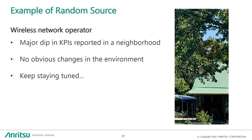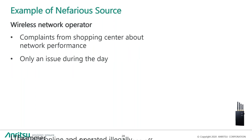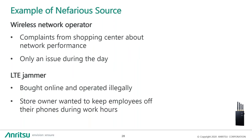Going back to our earlier example where we had a dip in network performance: power finding is how you find that type of interference source. With the LTE jammer, even if the person who installed it denies its existence, you have pretty strong evidence to say further investigation is needed in that area. And now I'll stop keeping you in suspense on the random source example — the network operator saw some dips in KPI and couldn't figure out what was going on. Our field engineers went out with this carrier and, utilizing the RTSA, were able to find that a private home had gone to eBay and purchased a repeater. But this repeater was very poorly manufactured — instead of only amplifying the downlink signal from one carrier, it was bleeding into the uplink signal of another carrier, completely distorting the uplink and ruining all that carrier's uplink bandwidth.